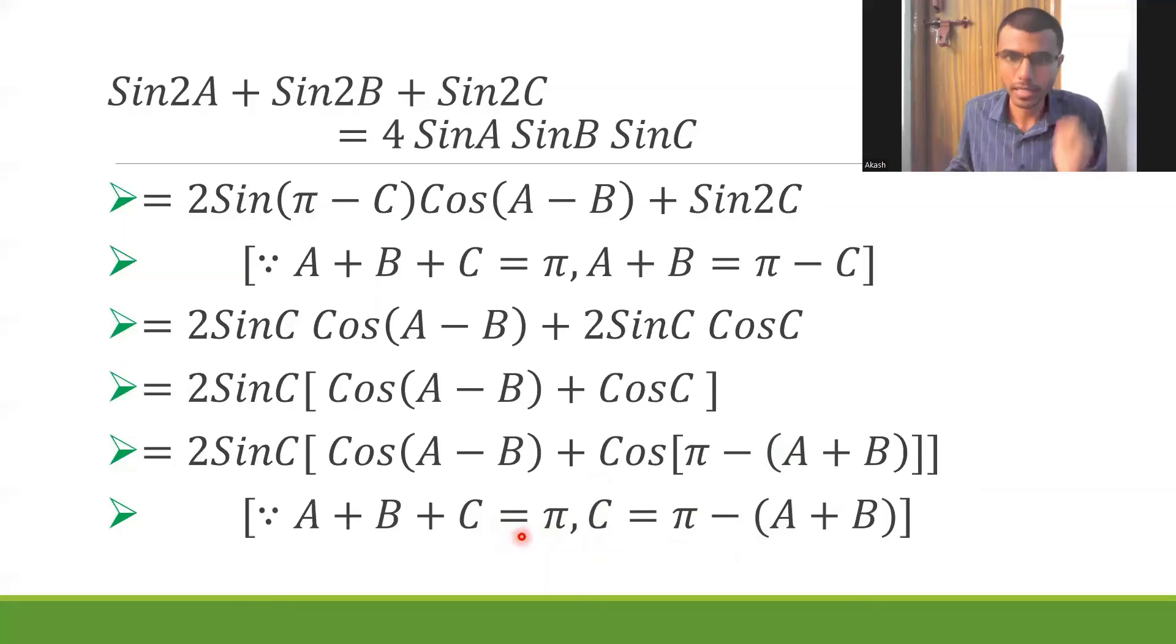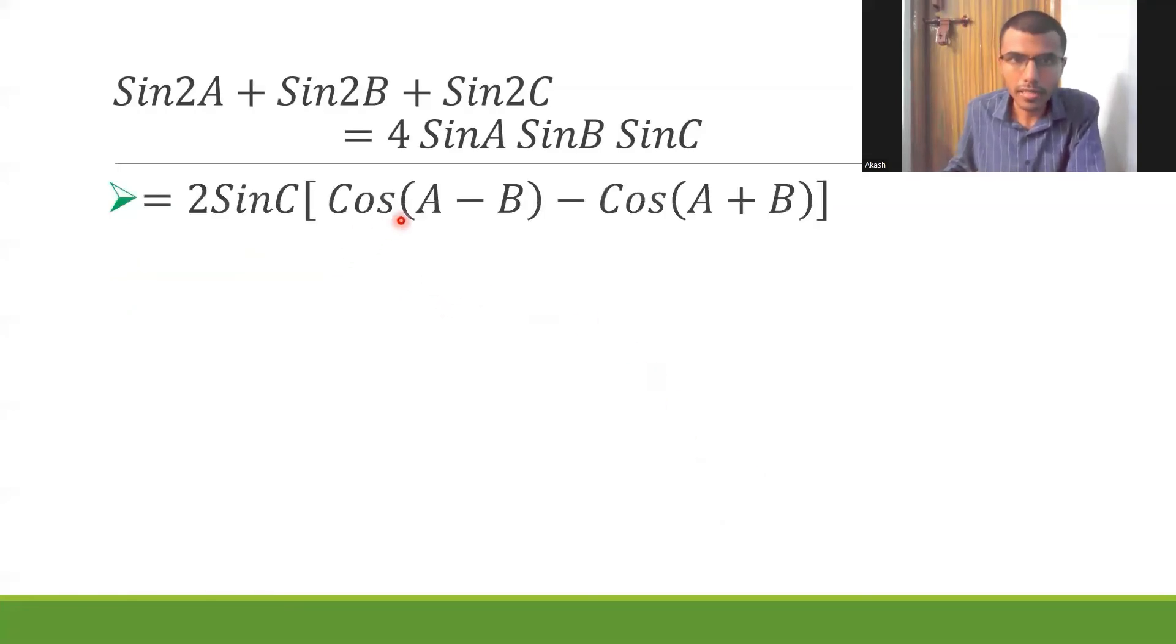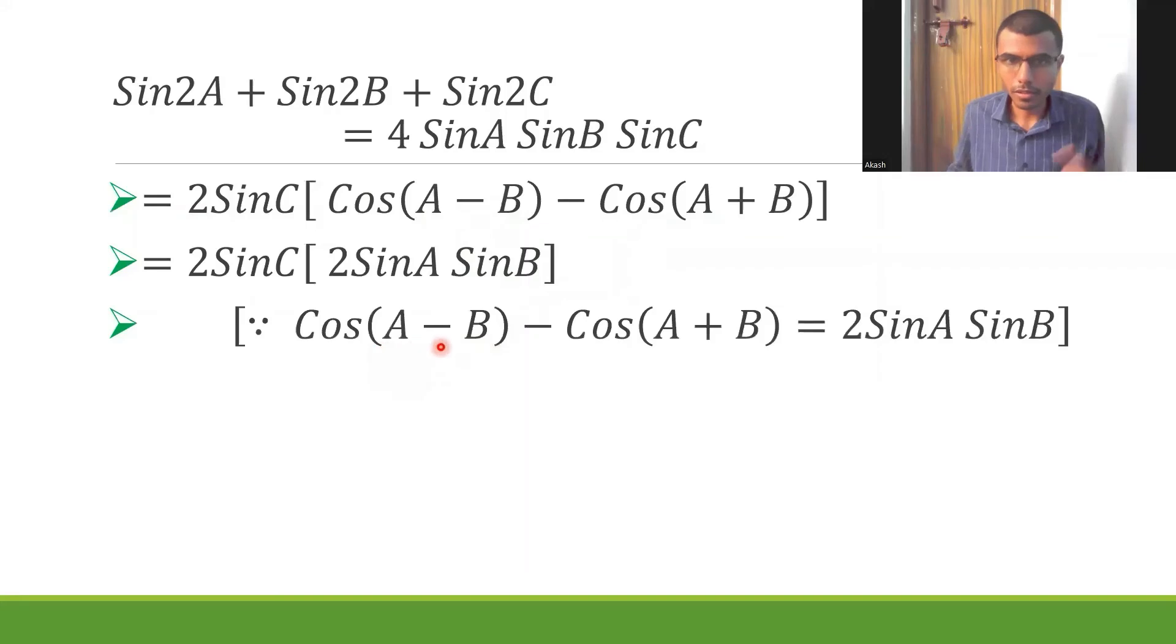Next, cos(π-θ) is -cosθ, so this would be nothing but -cos(A+B). So 2sinC into cos(A-B) - cos(A+B). Now cos(A-B) - cos(A+B) is 2sinA sinB, so in place of this I'm going to put it as 2sinA sinB. Don't forget to mention the reason again, since cos(A-B) - cos(A+B) is 2sinA sinB.